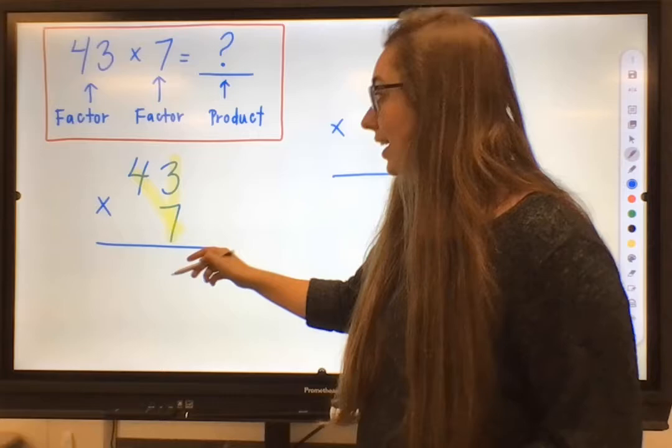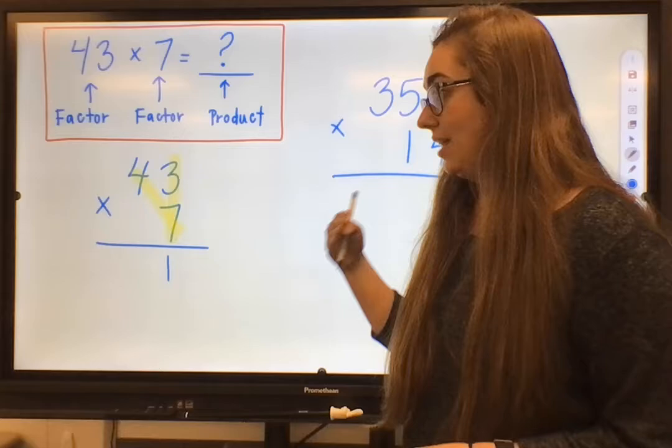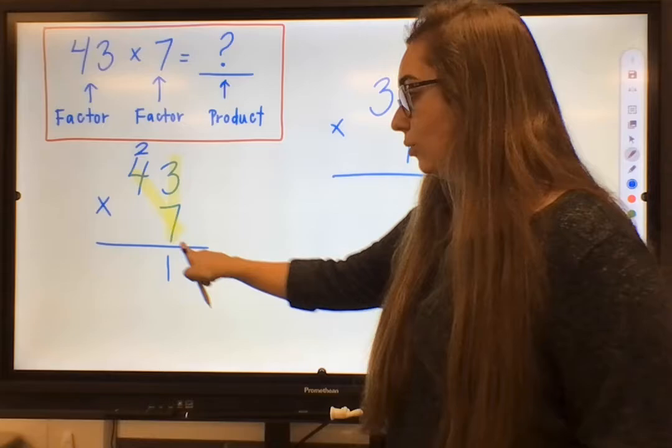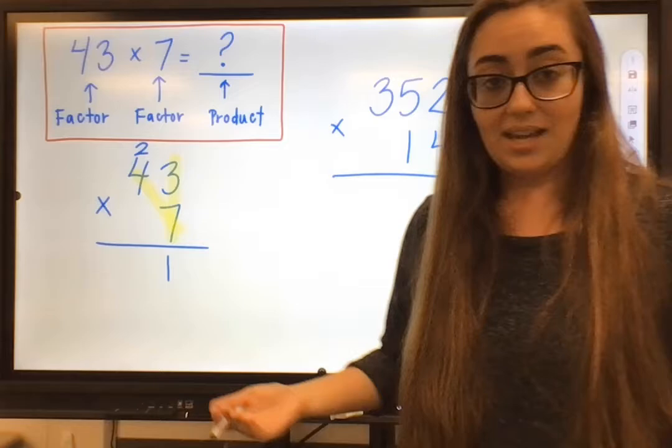So when I go to solve that 7 times 3, I know that to be 21, but we only put the 1 down below. Because this is a two-digit answer that we get from that 7 times 3, the 2 has to be carried over to the next digit because we can only put one digit below here.